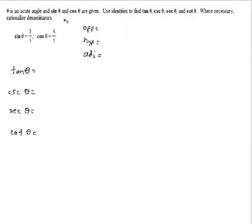So, the directions here, we've got θ is an acute angle, so that is our reference angle. It gives us what sine and cosine of θ are, 3/5 and 4/5 respectively. And it says use identities to find the tangent, cosecant, secant, and cotangent of θ, where necessary to rationalize the denominators.